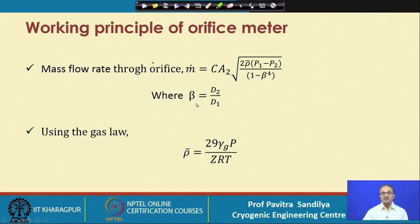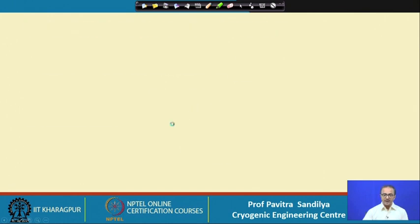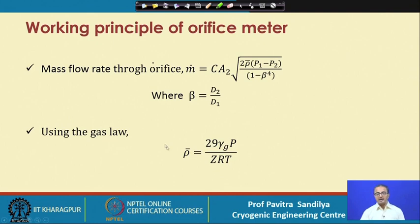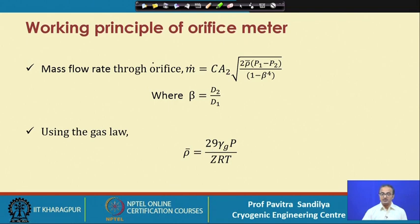We represent the average density using a gas law equation in which gamma_g is the specific gravity, z is the compressibility factor, T is the temperature, P is the pressure, R is the universal gas constant, and 29 is the molecular weight of air — because gamma_g is defined as the density of the gas divided by the density of air.